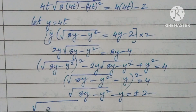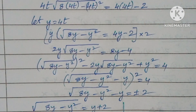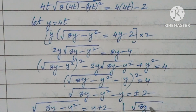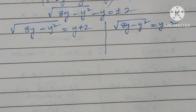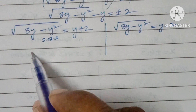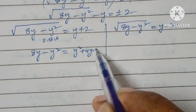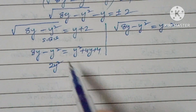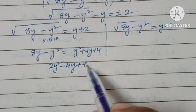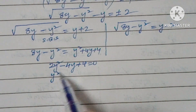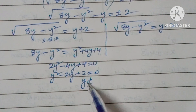So square root of (8y minus y squared) minus y equals plus or minus 2. This gives two cases. Case 1: square root of (8y minus y squared) equals y plus 2. Squaring both sides: 8y minus y squared equals y squared plus 4y plus 4, which gives 2y squared minus 2y plus 4 equals 0, or y squared minus 2y plus 2 equals 0. The discriminant gives 4 minus 8, which is negative — so y does not belong to real numbers.